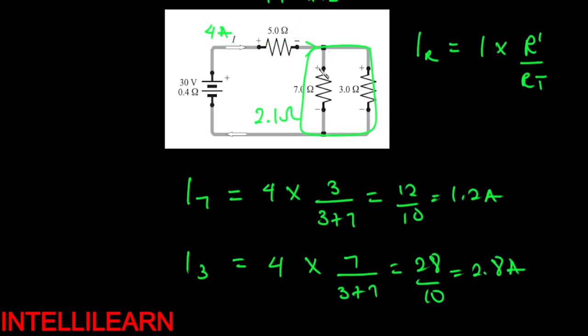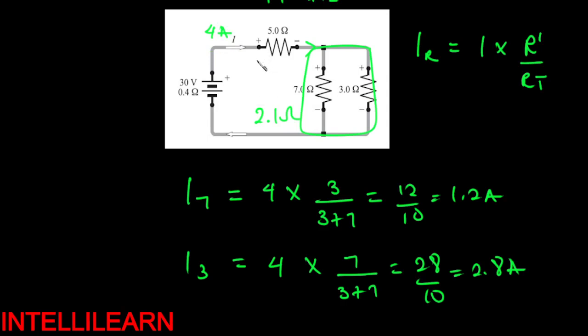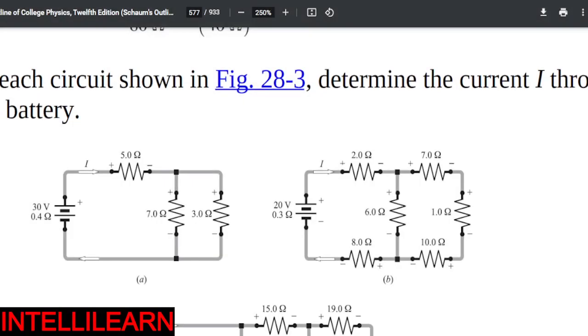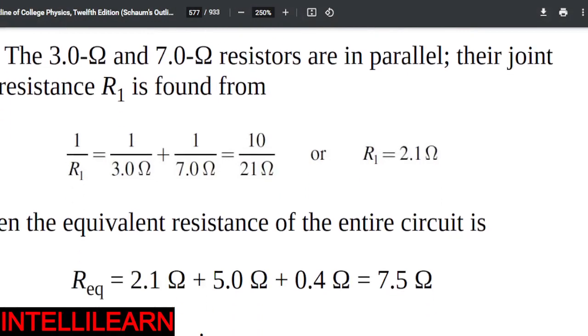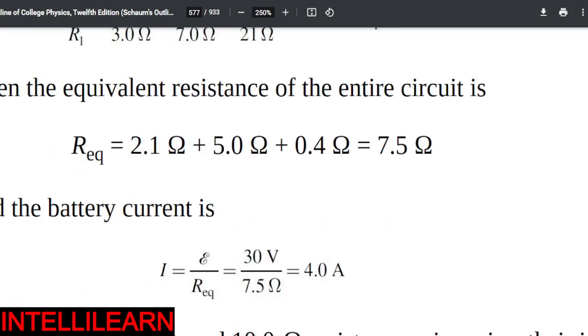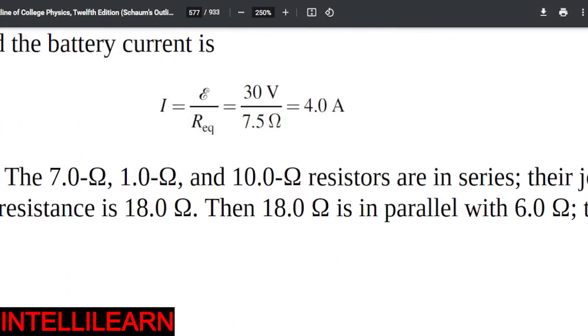So that means I didn't even need to find the current before finding the voltage. Once I know the voltage across the 5 ohm is 20 volts, I just divide by 5 and I get the current to still be 4 amperes. It's extremely easy to do these things when you know what you want to do. So we have 4 amperes.